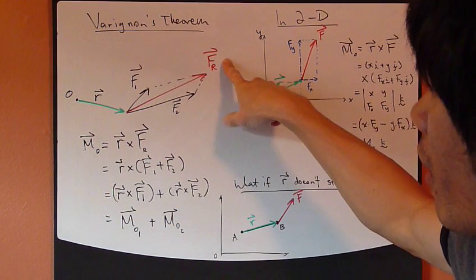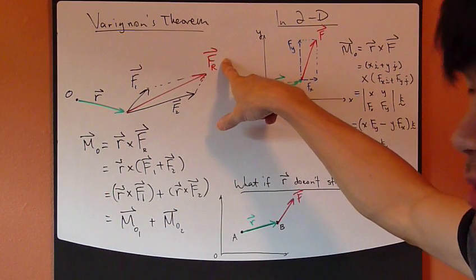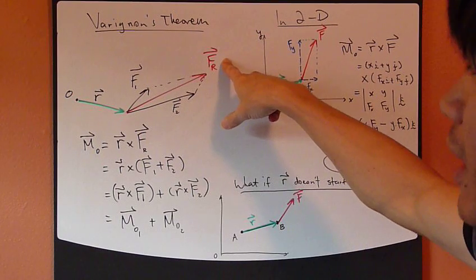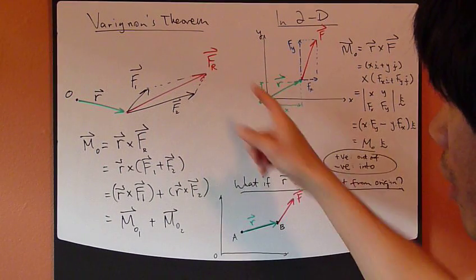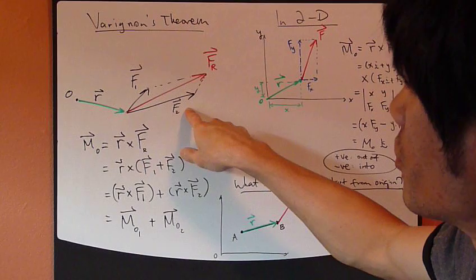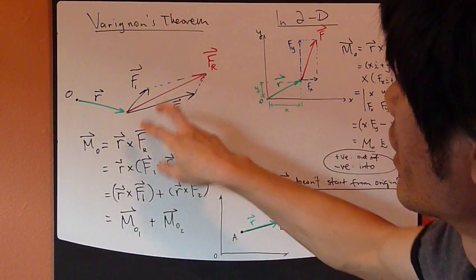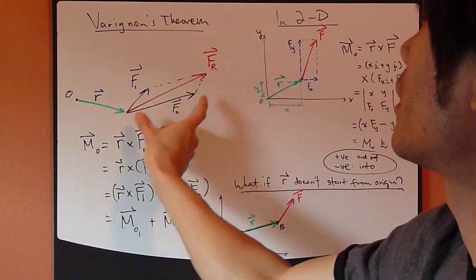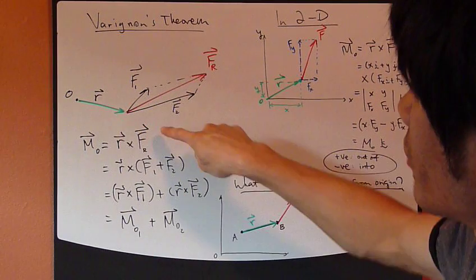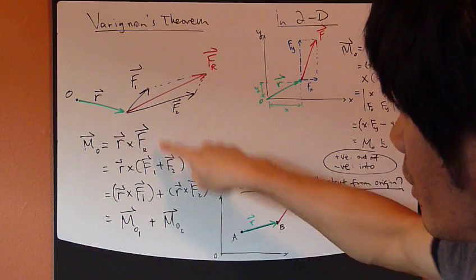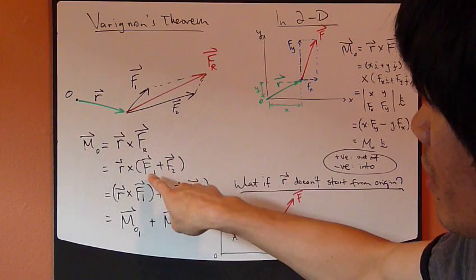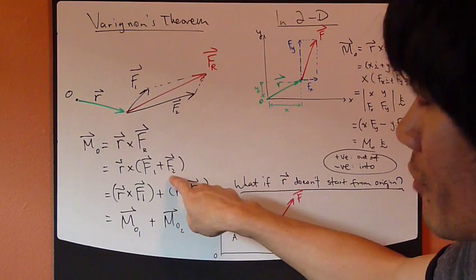Now this Fr can be resolved into components. I just chose to resolve it into this F1 and F2 direction. So it's a parallelogram. This is the length of F1, length of F2, this way. So Fr vector can be re-expressed as F1 vector plus F2 vector. It's a vector sum of these two components.